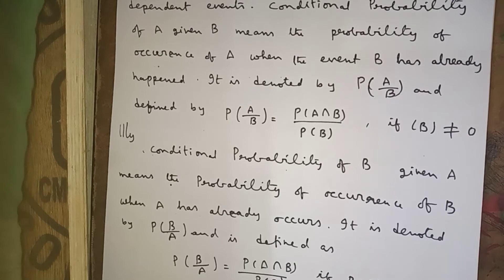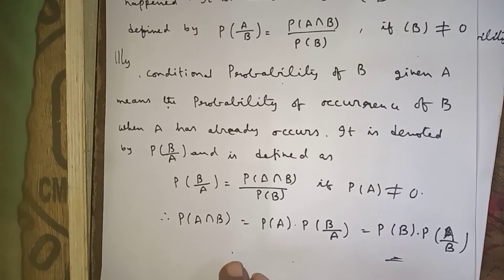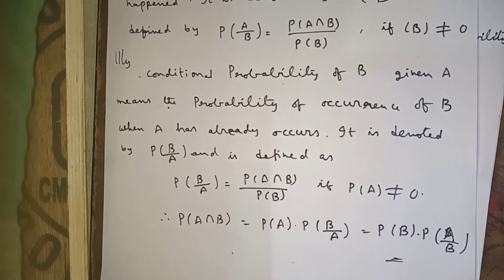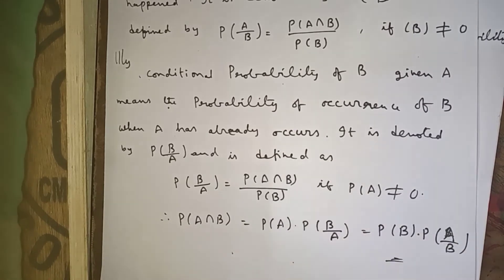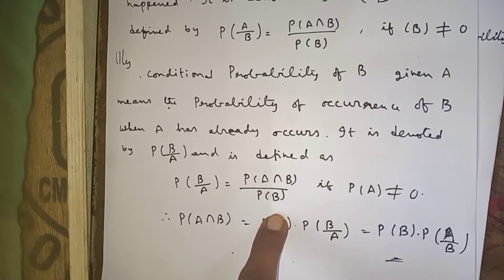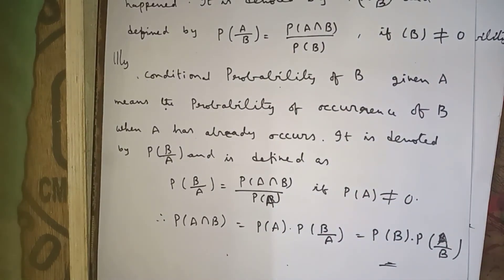If P(A | B) means event B already occurred and we are finding the probability of occurrence of A. Similarly, P(B | A) means event A already occurred and we are finding the probability of occurrence of B. It is defined as P(B | A) = P(A ∩ B) / P(A).